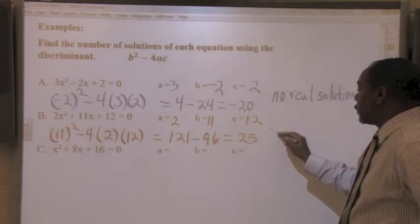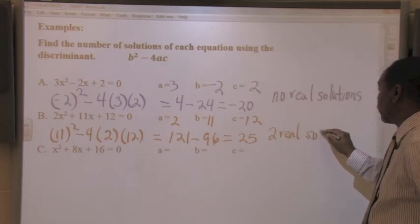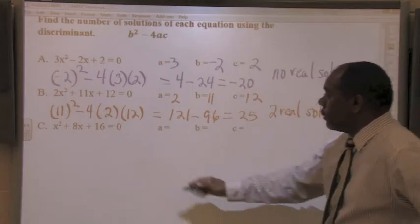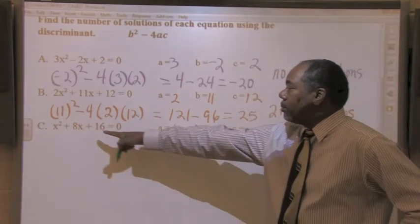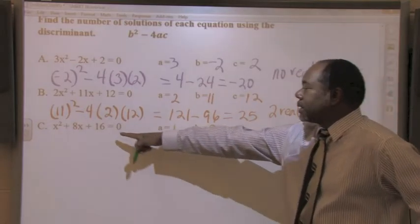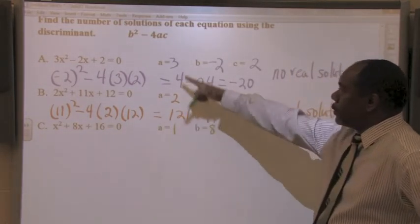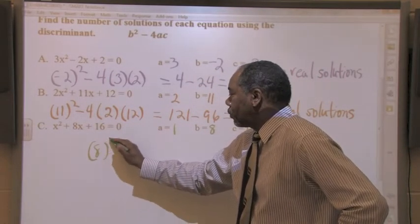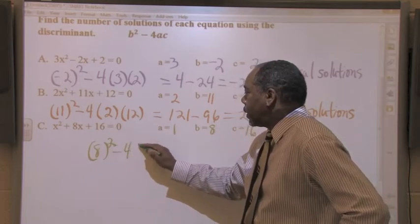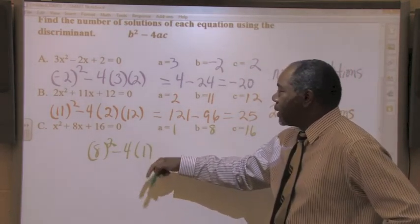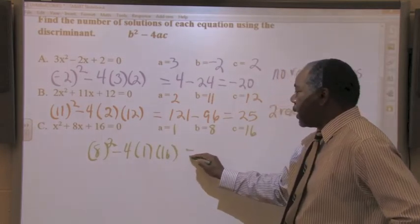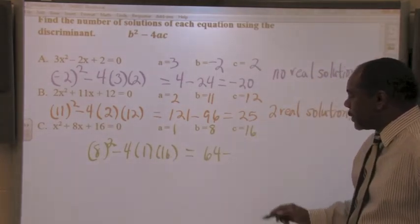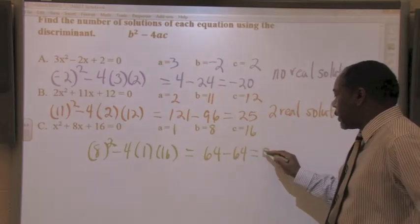Let's take a look at the last one. My A value is 1. My B value is 8. My C value is 16. I use my discriminant formula. B squared minus 4 times A times C. And I get 64 minus 4 times 1 is 4. 4 times 16 is 64. And I get 0.